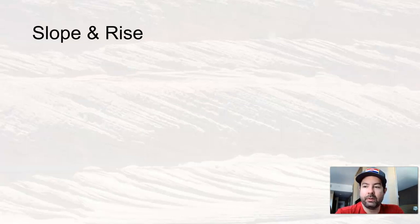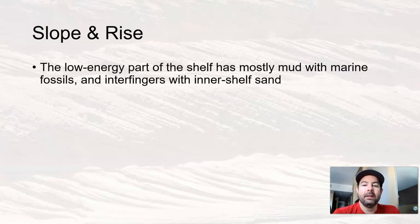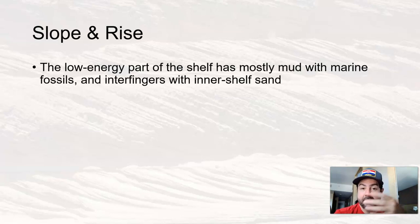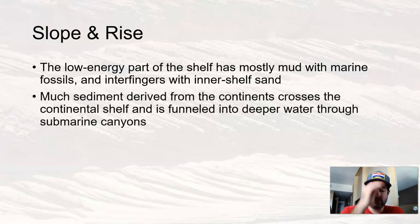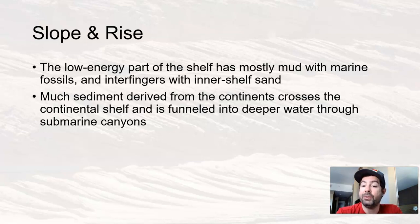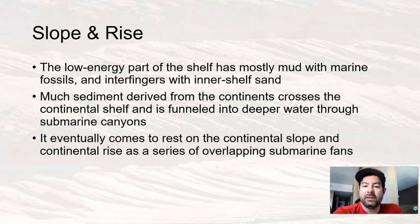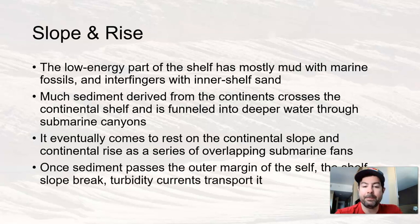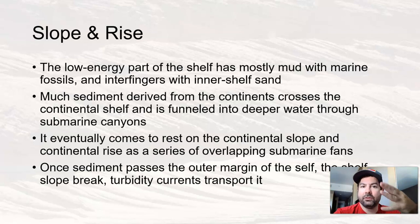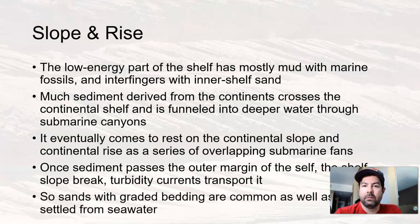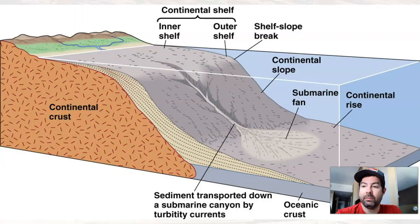On the continental slope and rise, the lower energy part of the continental shelf has mostly mud with marine fossils, and it inter-fingers as the facies end horizontally with the inner shelf sand. Much of the sediment derived from continents crosses the continental shelf and is funneled into deeper waters through submarine canyons, creating turbidity currents. It eventually comes to rest on the continental slope and continental rise as a series of overlapping submarine fans. Graded bedding is common, as well as mud that settled out from the oceanic water.